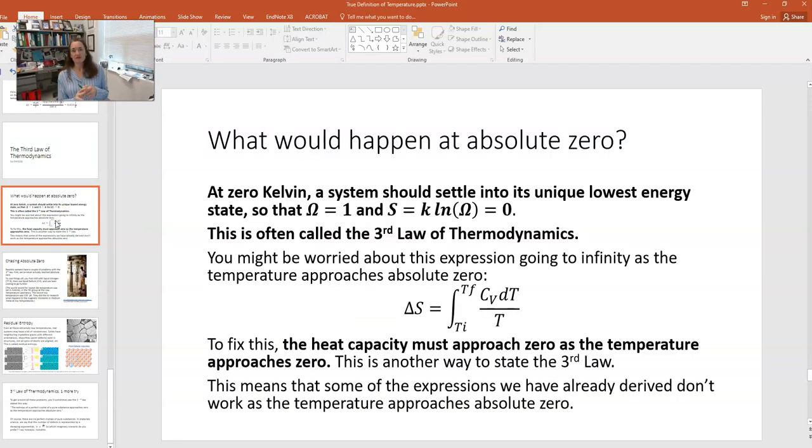So the third law of thermodynamics is all about what happens as the temperature approaches absolute zero. The third law of thermodynamics basically says that at zero Kelvin, a system should settle into its unique lowest possible energy state. Now, there's only going to be one way to do that. One possible lowest energy state.